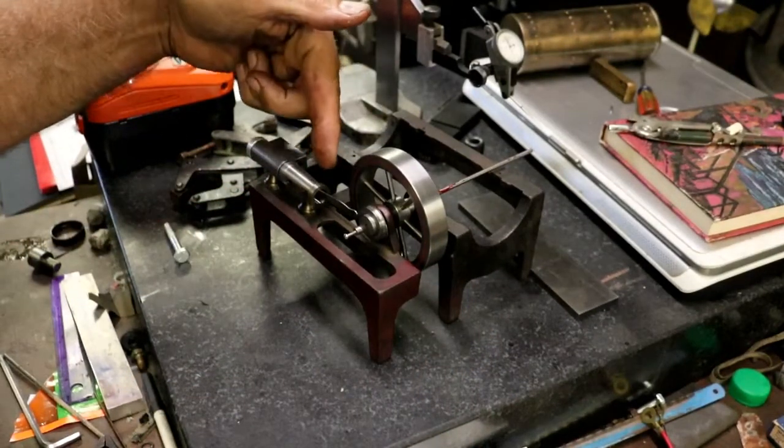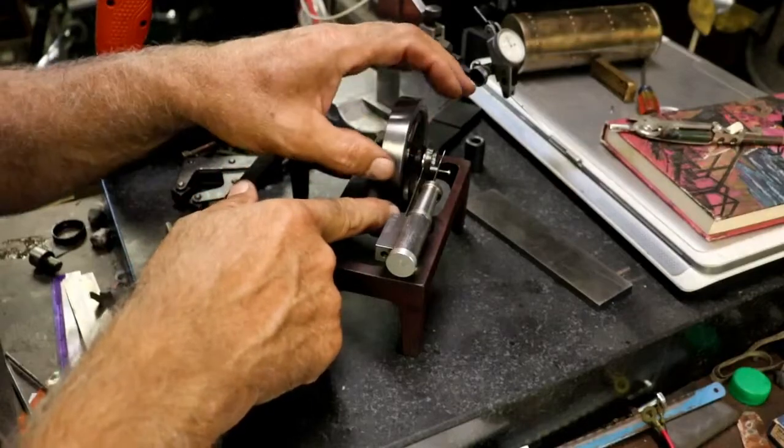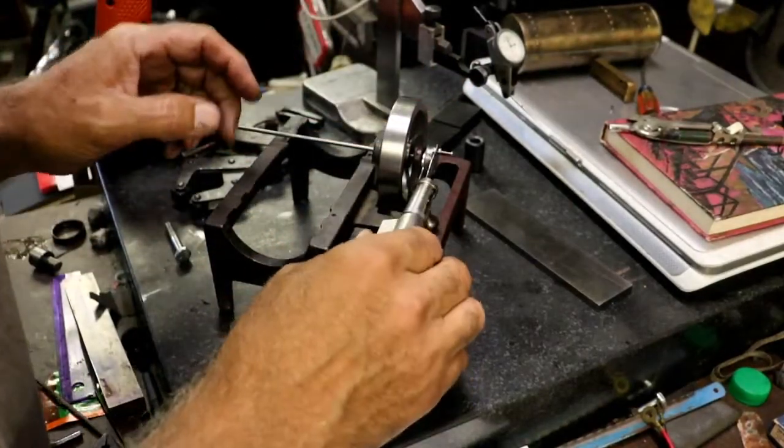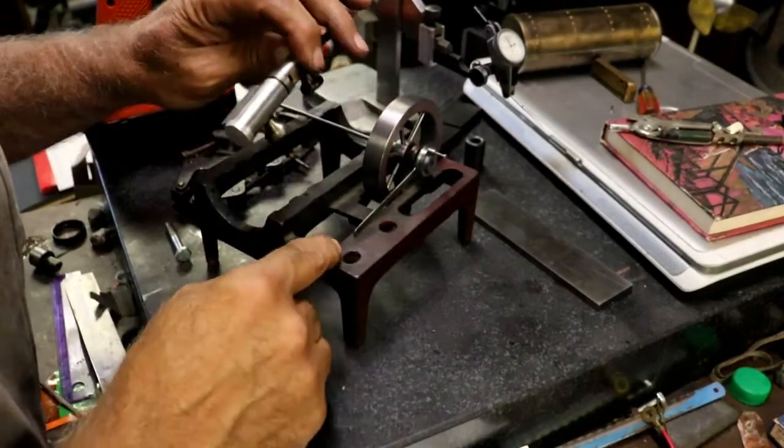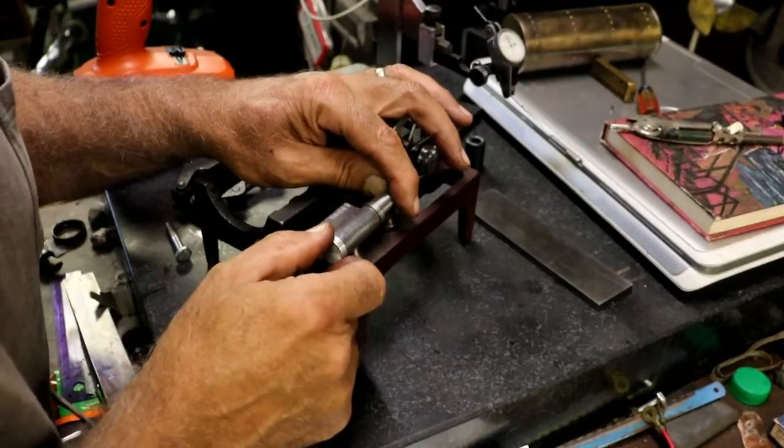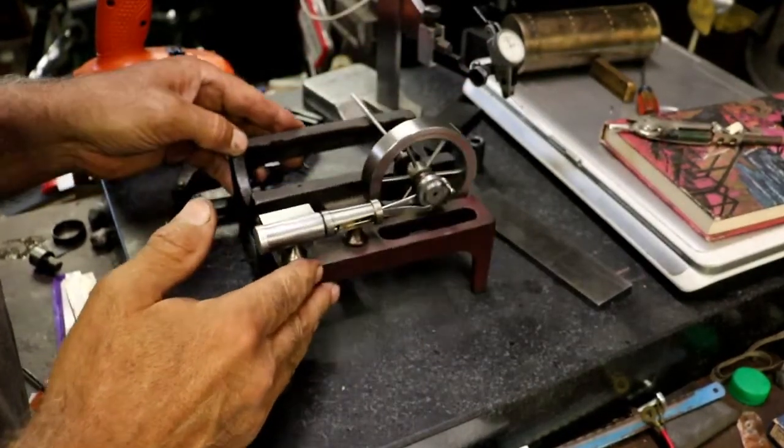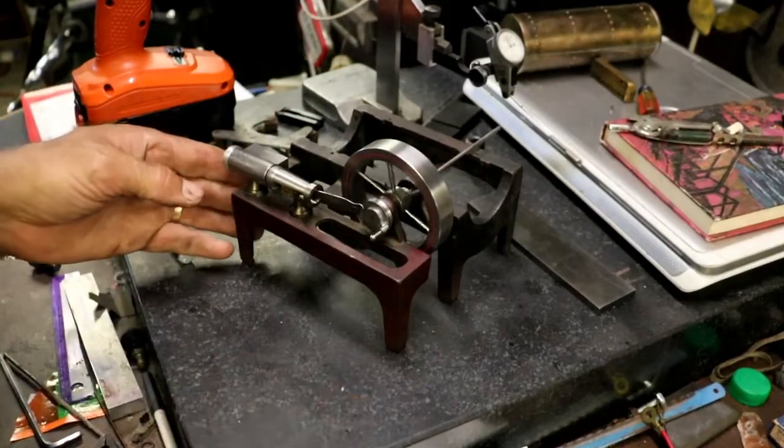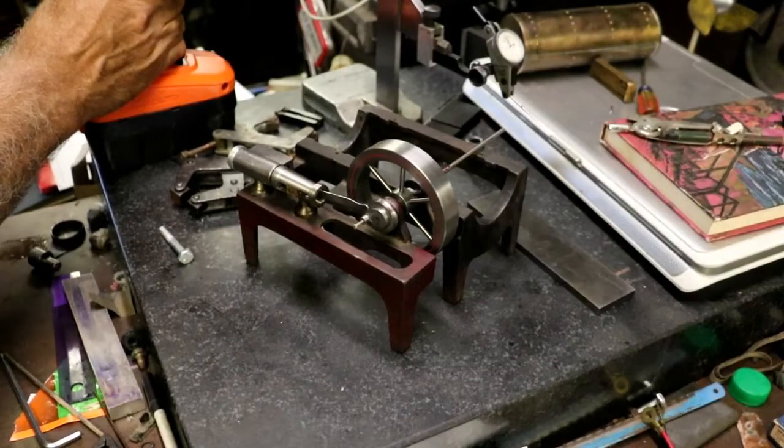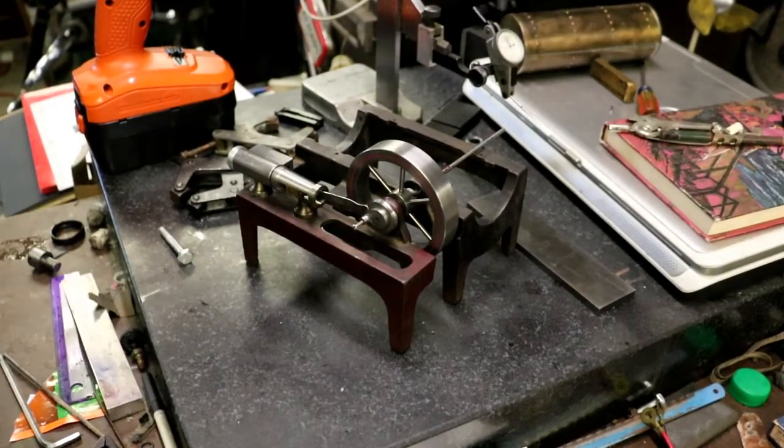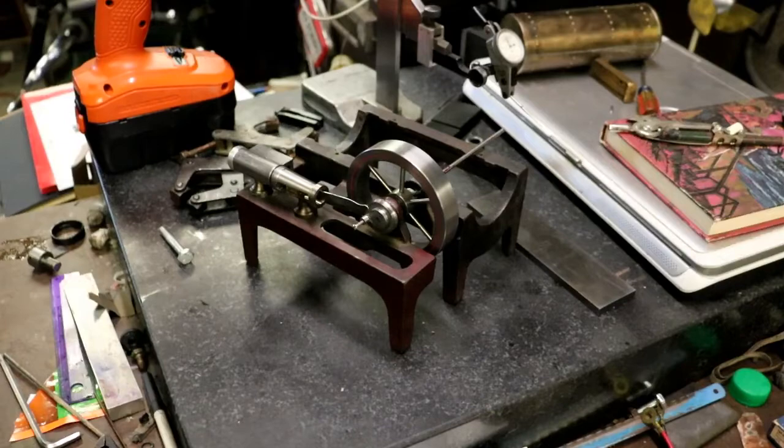So now I need to make the slide valve that goes in here and hooks to the eccentric. And we're getting there. There'll be just a screw and a washer underneath. These holes are big enough I'll be able to move her around quite a bit and get it all lined up. One step closer. So I'll move back over the lathe and work on that slide valve.